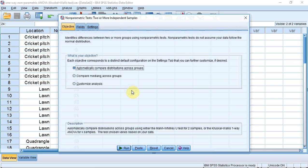At this point, you could click Run, and SPSS will make an educated guess at the test that you need to analyse your data. However, we know the test we want to use, so I'm going to click the Customise Analysis radio button.